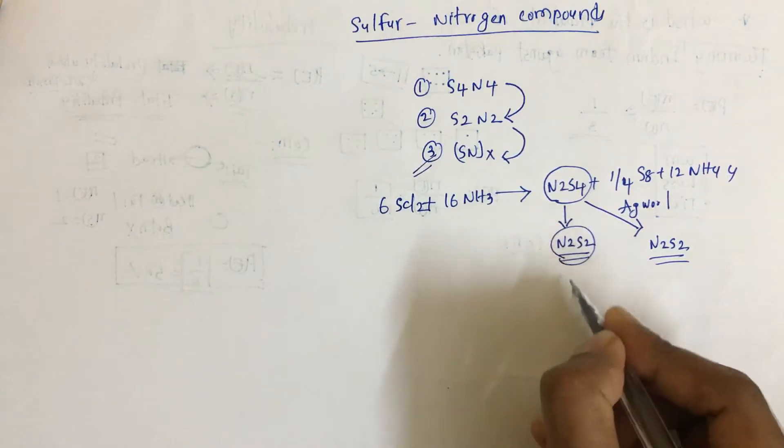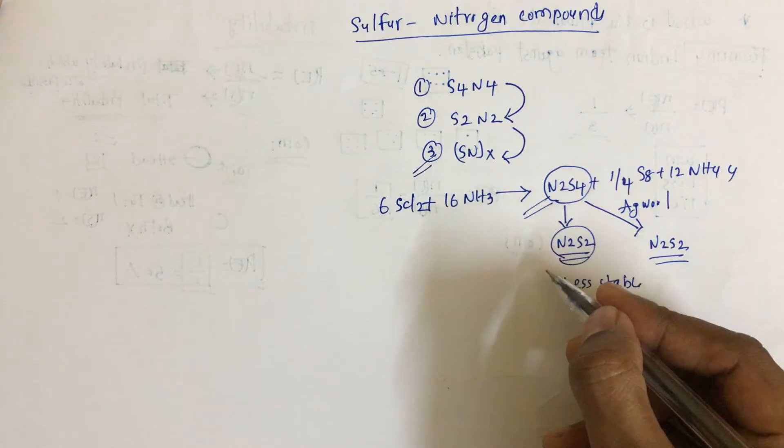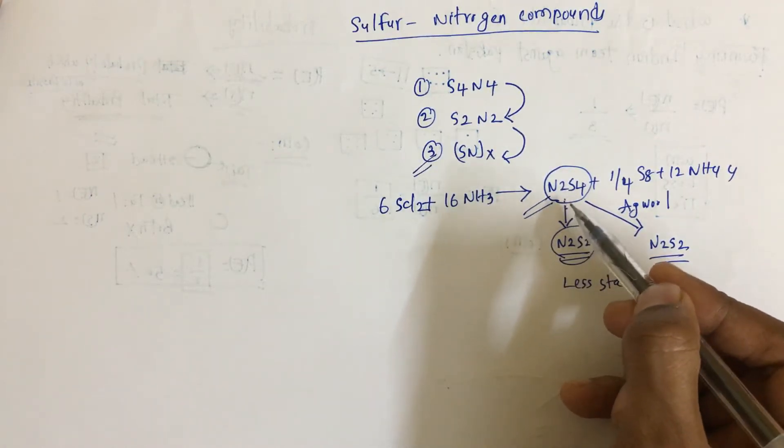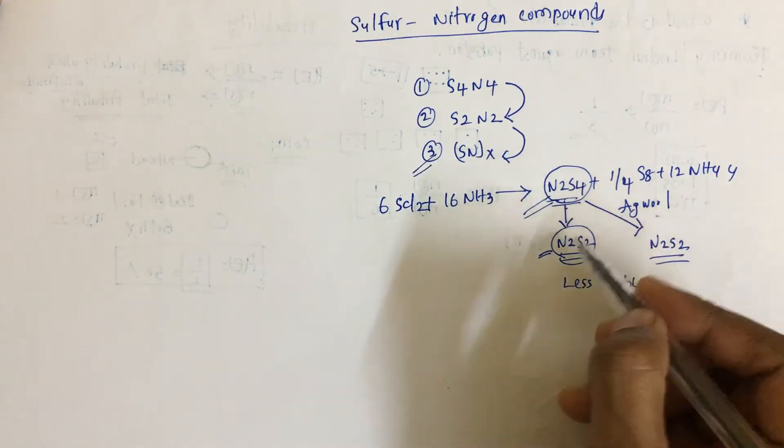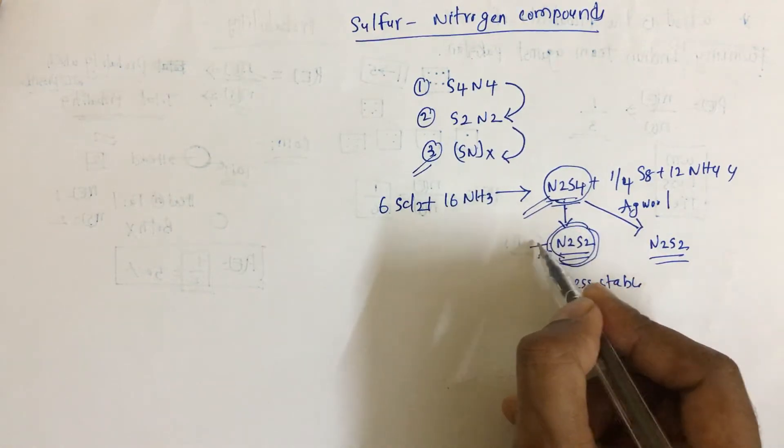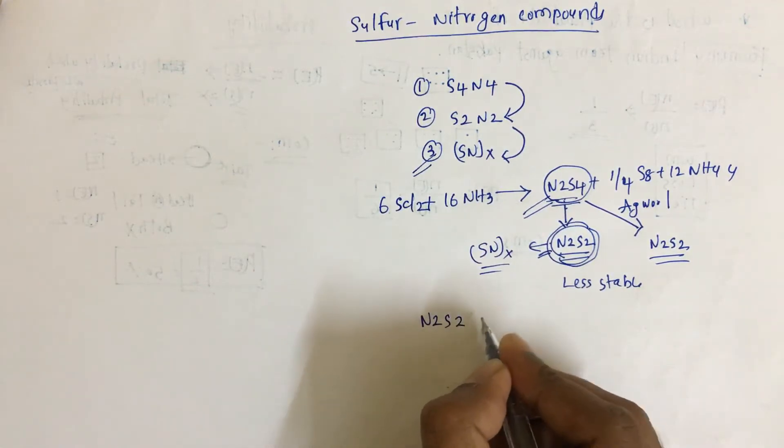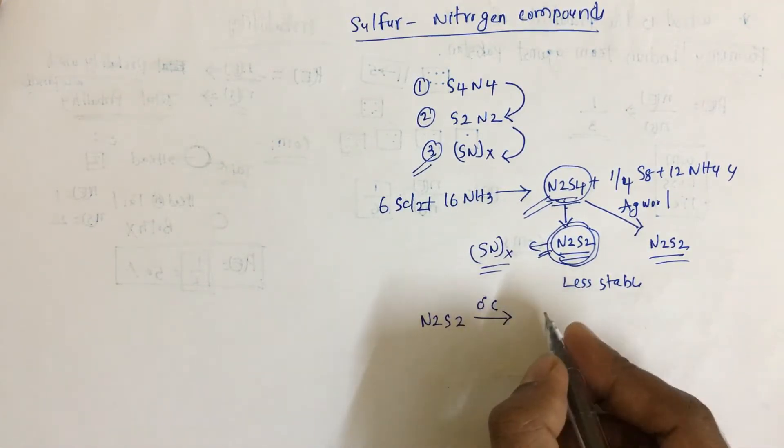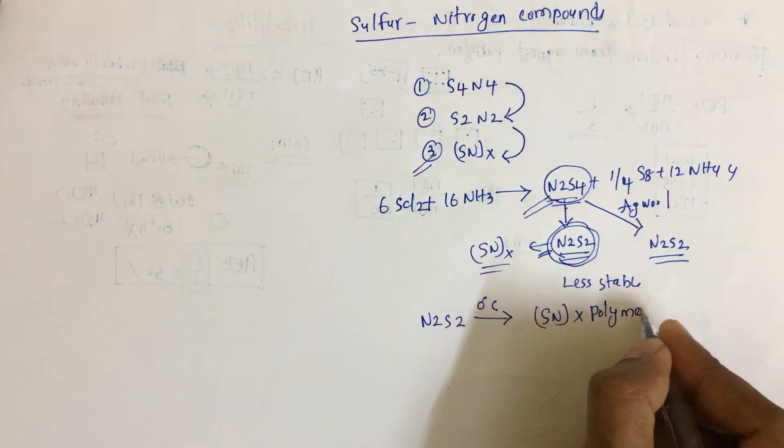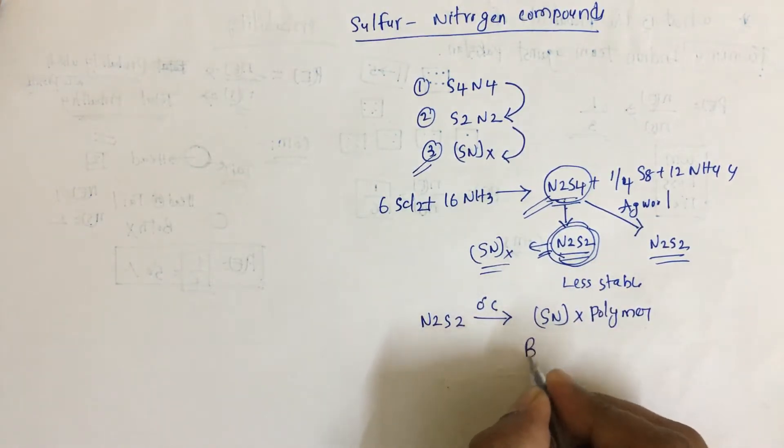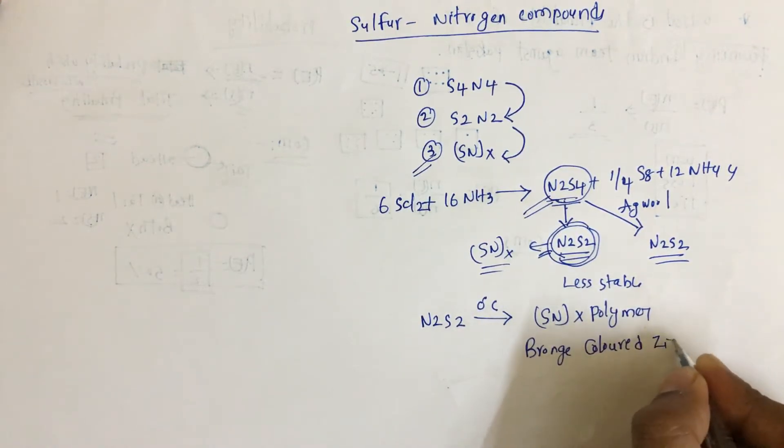Now, what about SNx? N2S2 is less stable than N4S4. N4S4 is more stable, but still not that stable compared to N2S2. Since it's less stable, this gets converted into SNx. N2S2, if we keep it for some time at zero degree centigrade, gets converted into SNx polymer. This polymer appears as a bronze colored zigzag polymer.